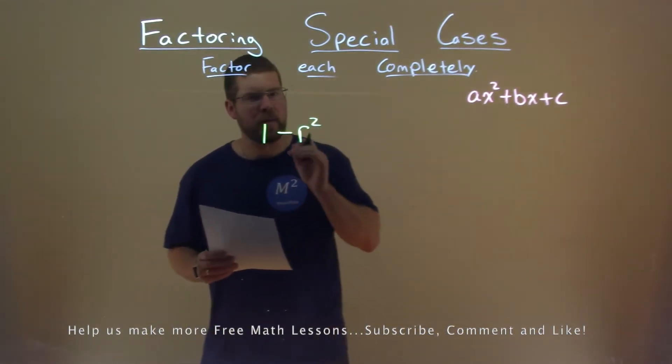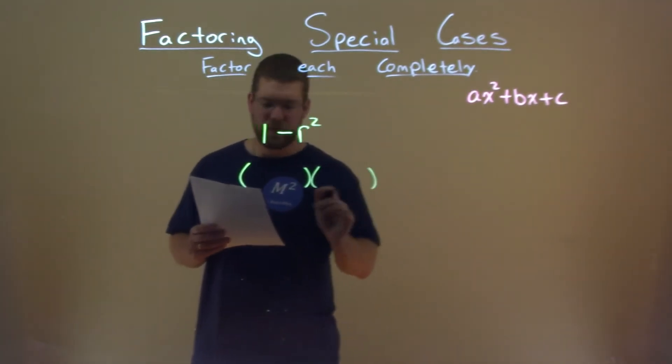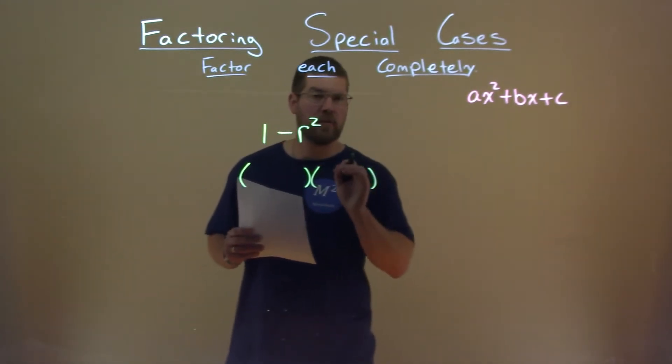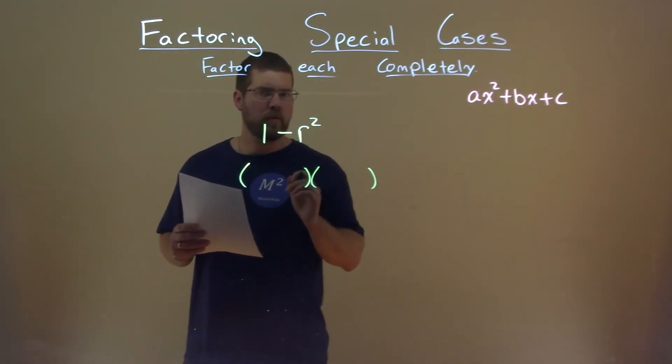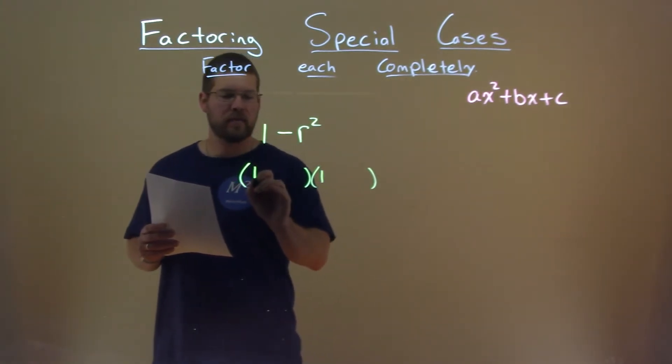This is so simple it becomes a little tricky. We know it has to be in some parenthesis form like this, but notice that 1 and R squared are both perfect squares. Square root of 1 is 1, so 1 times 1 here gives us that 1.